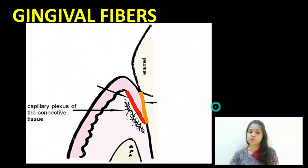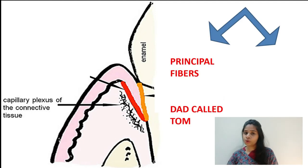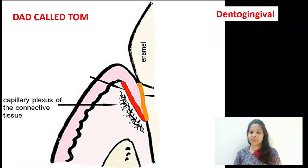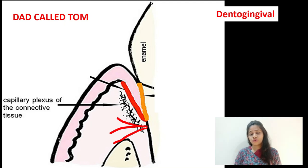Gingival fibers help brace the marginal gingiva against the tooth structure — they help in the attachment of the marginal gingiva to the alveolar bone as well as to the root cementum. The principal group is a set of five fibers with the mnemonic 'DAD CALLED TOM.' The first group is the dentogingival fibers, which arise from the cementum and fan out in all directions, attaching to the crest of the alveolar bone as well as to the marginal gingiva to provide support to the tooth.